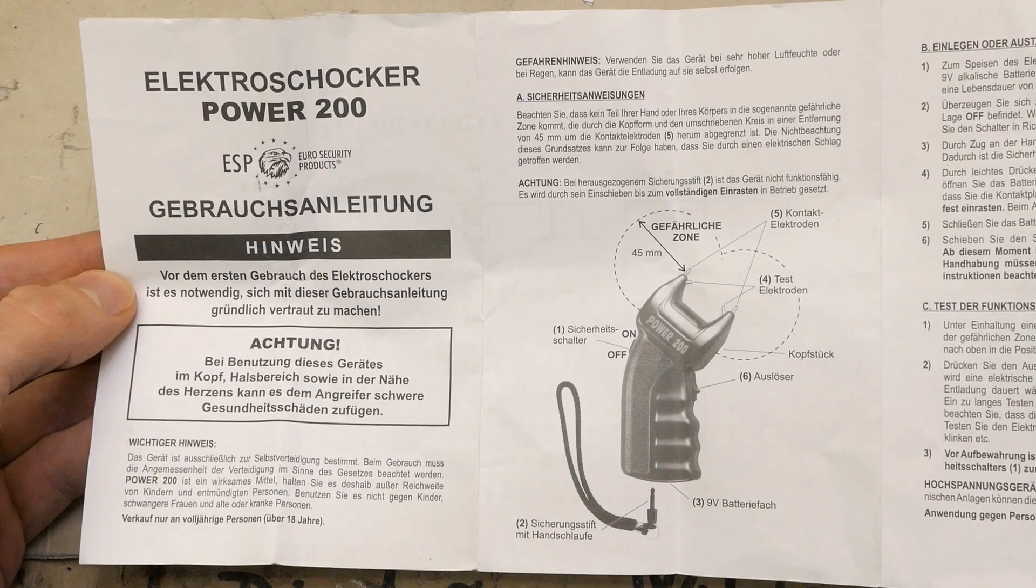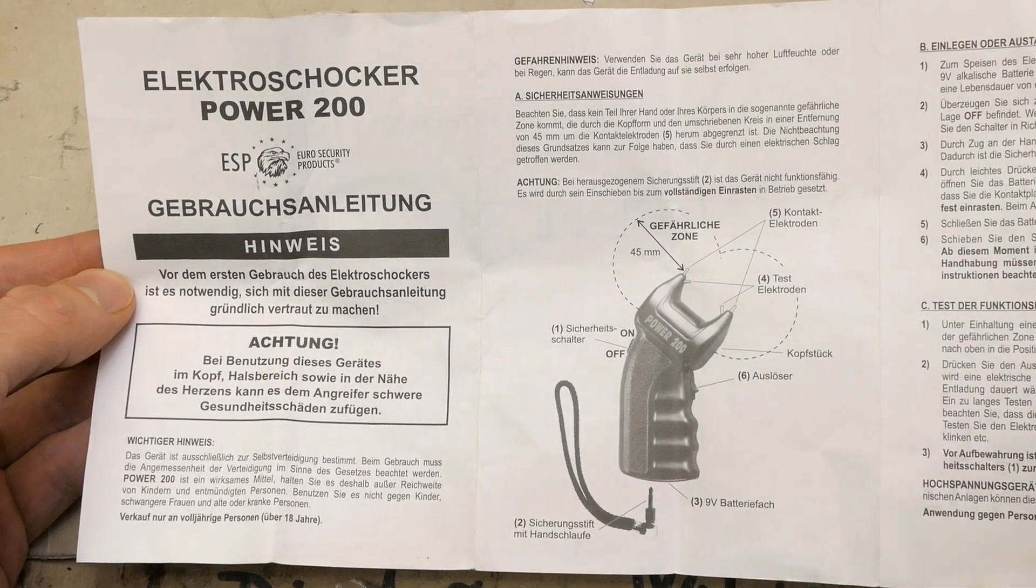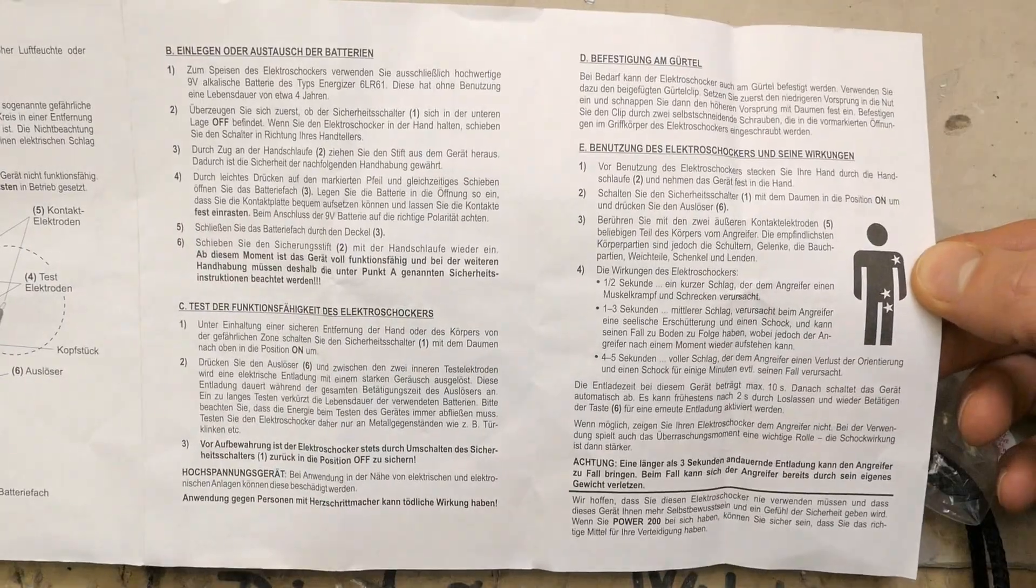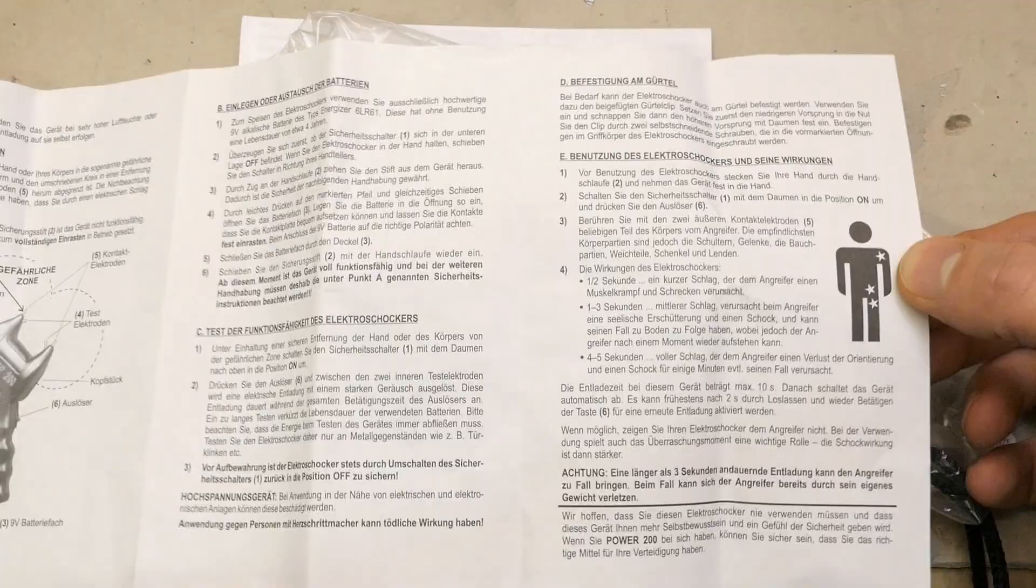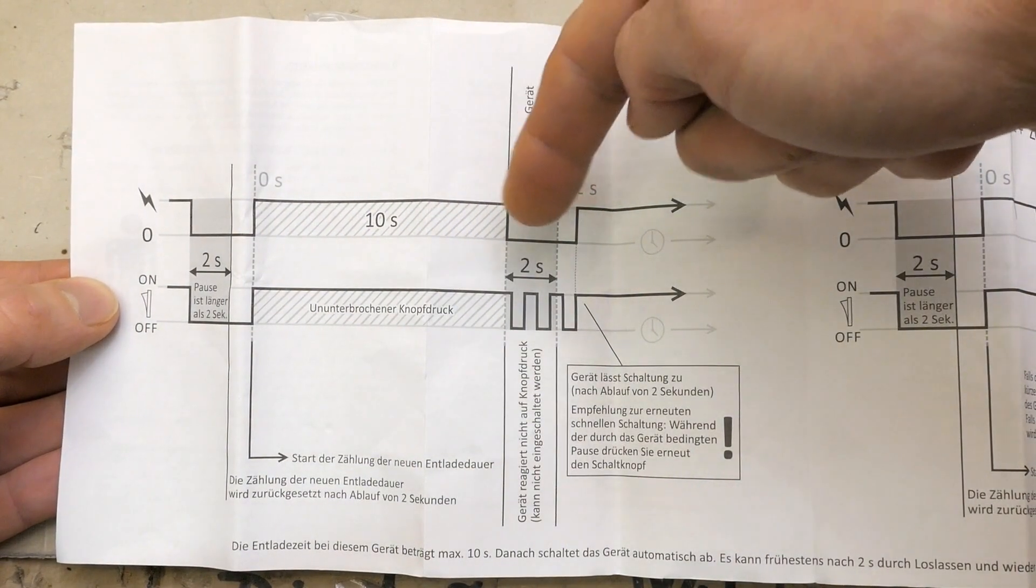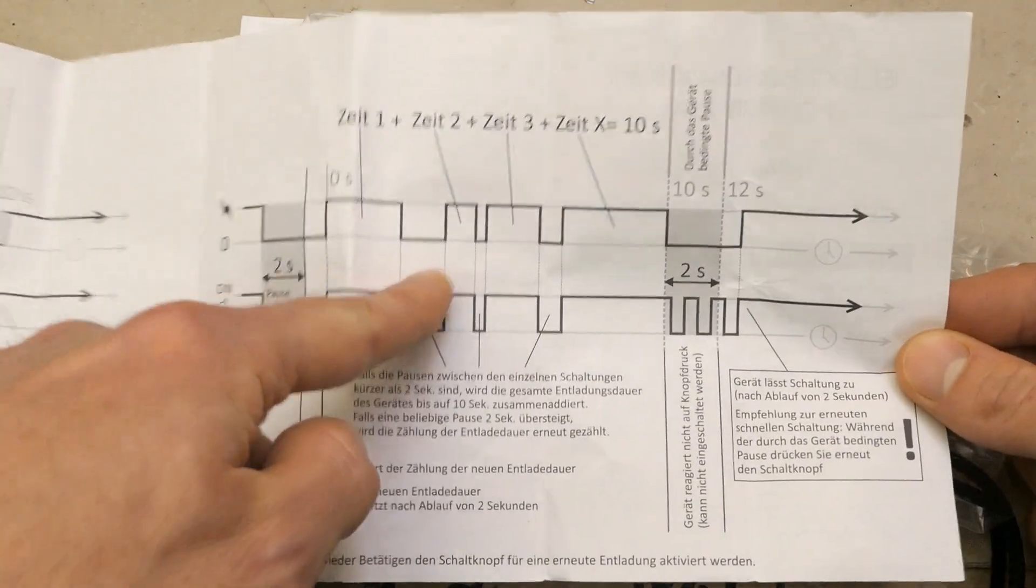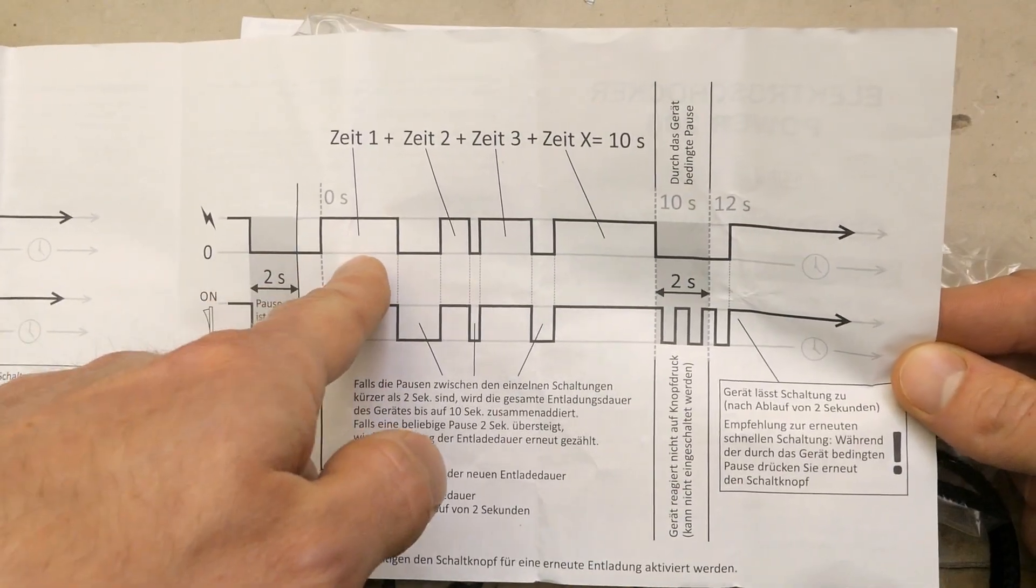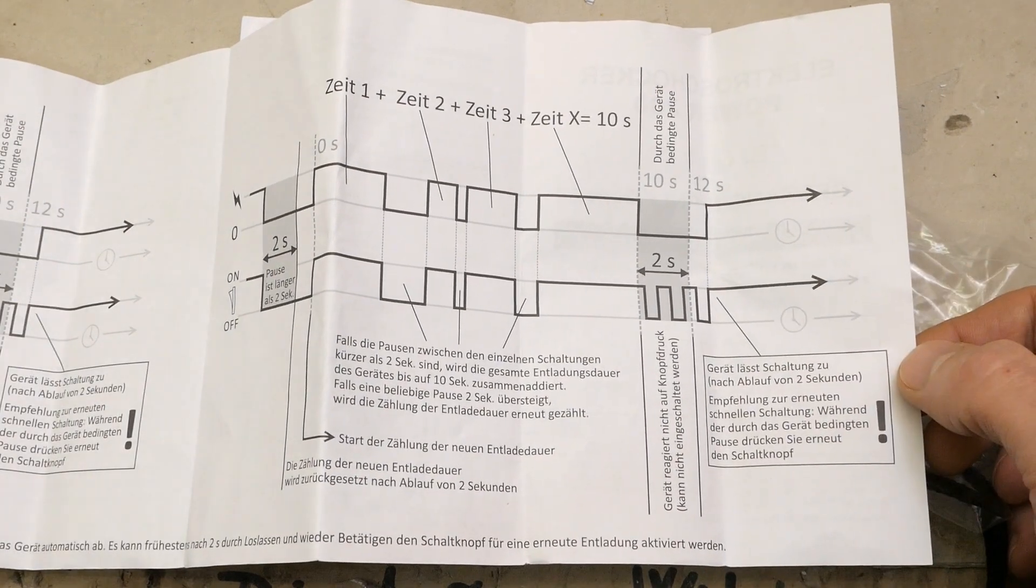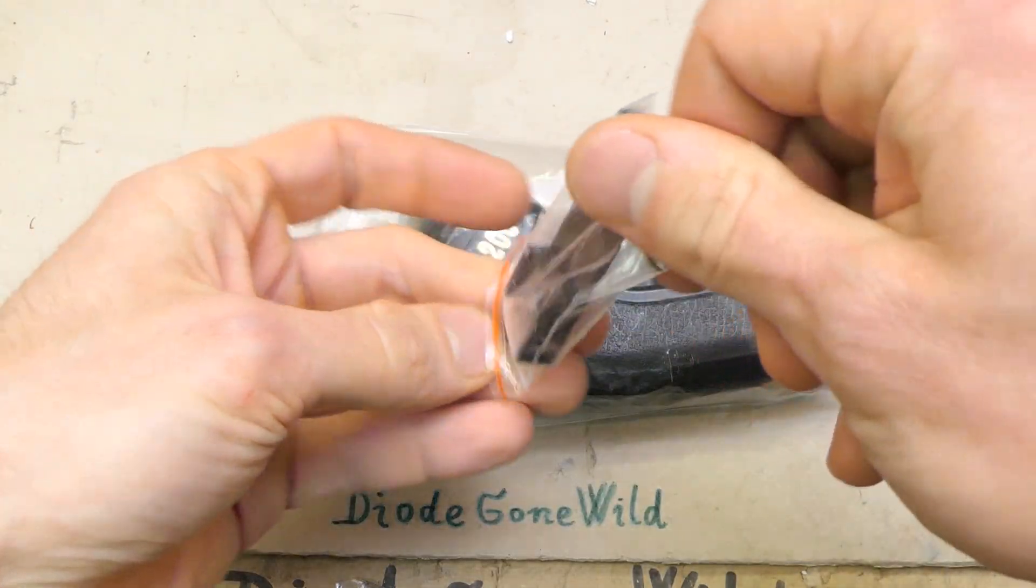Some warnings, and here's the stun gun and the strap and the manual. The manual is in German with a ridiculous amount of warnings and dangerous zones around those electrodes. It shows where you're supposed to shock a person. You can run it continuously for up to 10 seconds, then it must be off for at least 2 seconds.